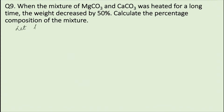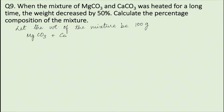Let the weight of the mixture be 100 grams. Therefore, magnesium carbonate plus calcium carbonate equals 100 grams, as the mixture consists of magnesium carbonate and calcium carbonate. If the weight of magnesium carbonate is X grams, then the weight of calcium carbonate in the mixture will be 100 minus X grams.